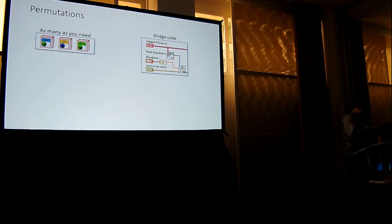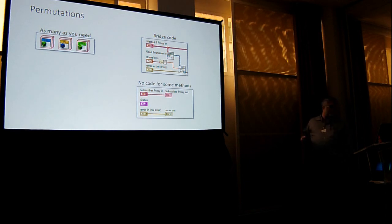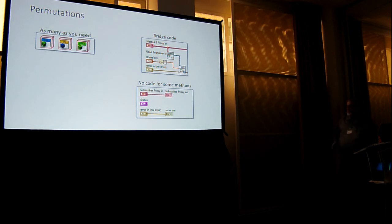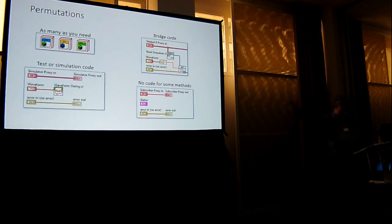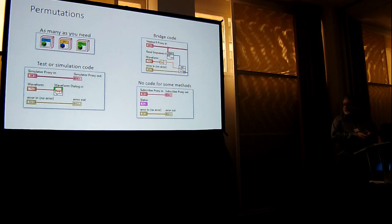When the publisher publishes data, all it has is a list of subscriber proxies — no idea where the data is going. It gets its data, parses it out, and sends it where it needs to go. We preserve all the benefits of the self-addressed message pattern. You can make as many as you need, and your subscribers don't even know they're subscribers — they're just actors in your system. If the APIs don't quite line up, you can put a little bridging code in there. These actor proxies are also great for putting an actor in a test harness and testing it independently.